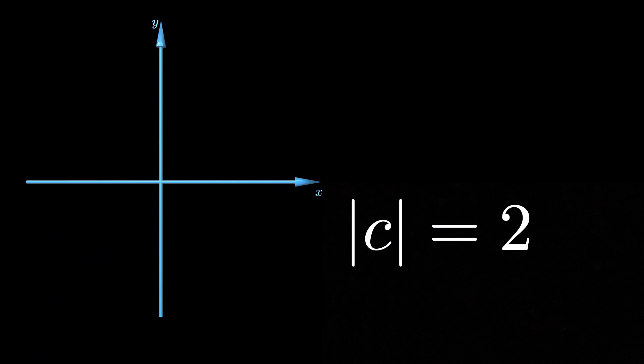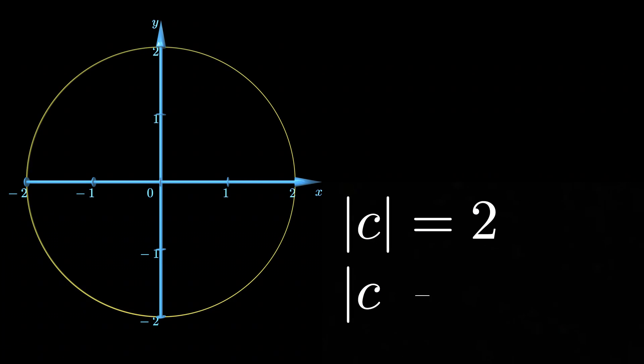We start this video with a very simple constraint on a complex variable set. The solution includes all complex numbers located at a distance of two units from the origin. Now let's have a look at a few similar yet more complicated equations.